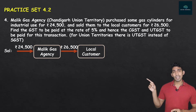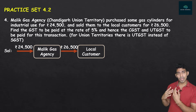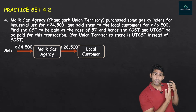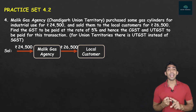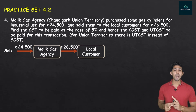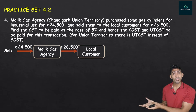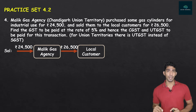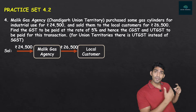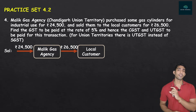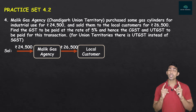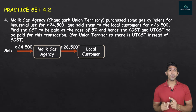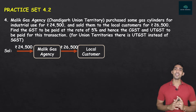Many students get confused and think 24,500 is the input tax and 26,500 is the output tax — that is the biggest mistake. Input tax and output tax are actually GST amounts. The 24,500 is the taxable value at the time of purchase, and 26,500 is the taxable value at the time of sale. If you don't have the GST amounts already, you need to calculate GST first, which then becomes your input tax and output tax.